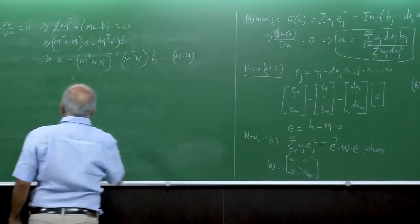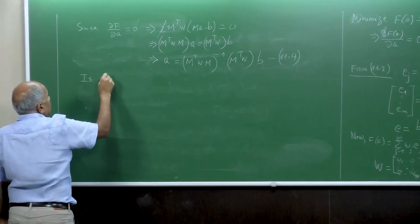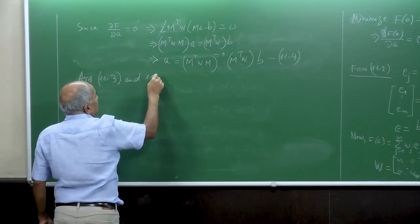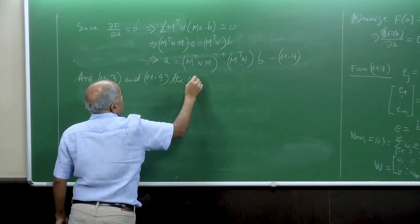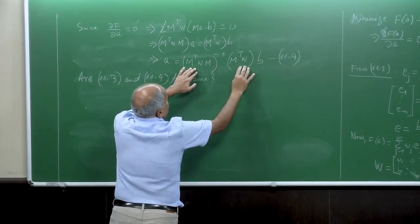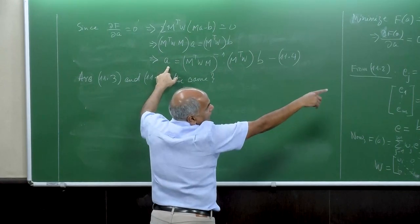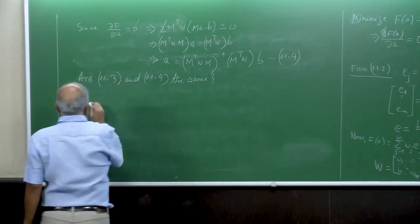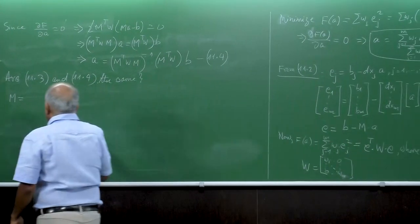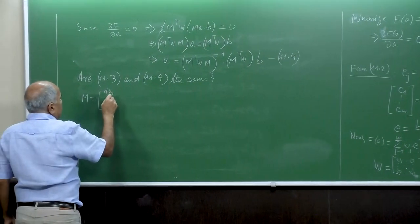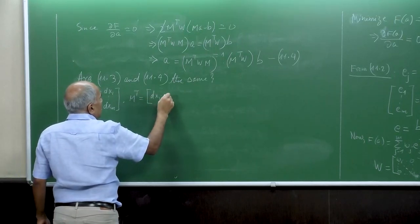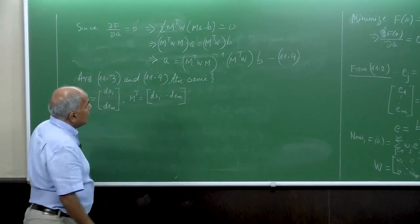The question is: are equations 11.3 and 11.4 the same? Let us verify by computing. The matrix m is the column (dx_1, ..., dx_m), so m^T = (dx_1, ..., dx_m) as a row vector.